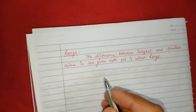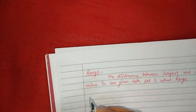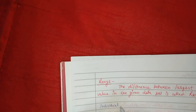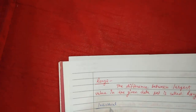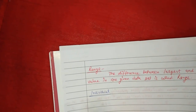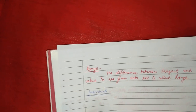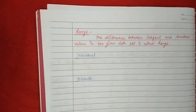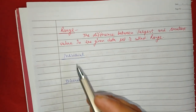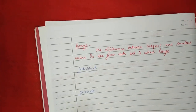When we talk about range calculation for statistical data, there are three types of data: one is the individual series, one is the discrete type data, and three is continuous. You have studied these three types of data sets before when we talked about mean, median, mode, or any other thing — individual, discrete, and continuous.